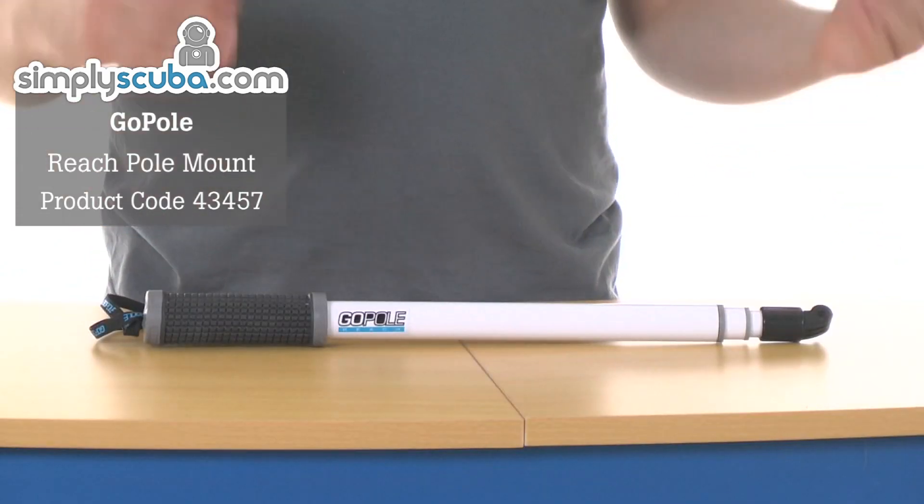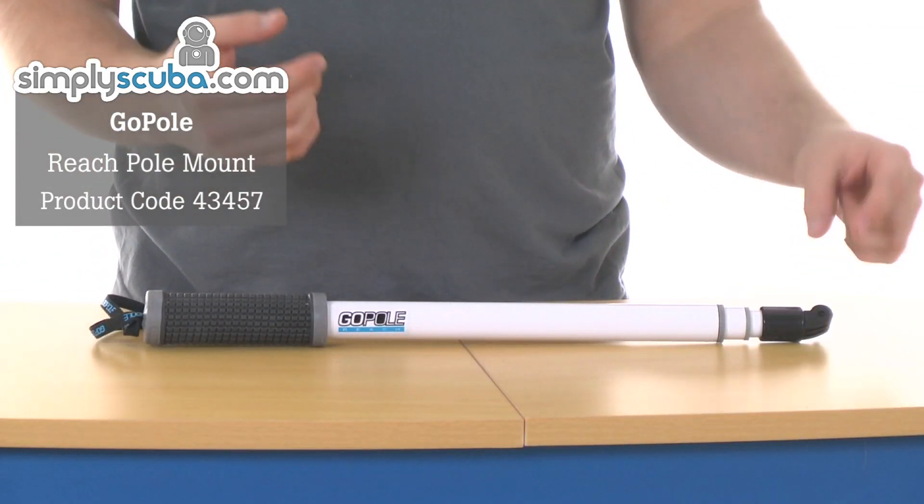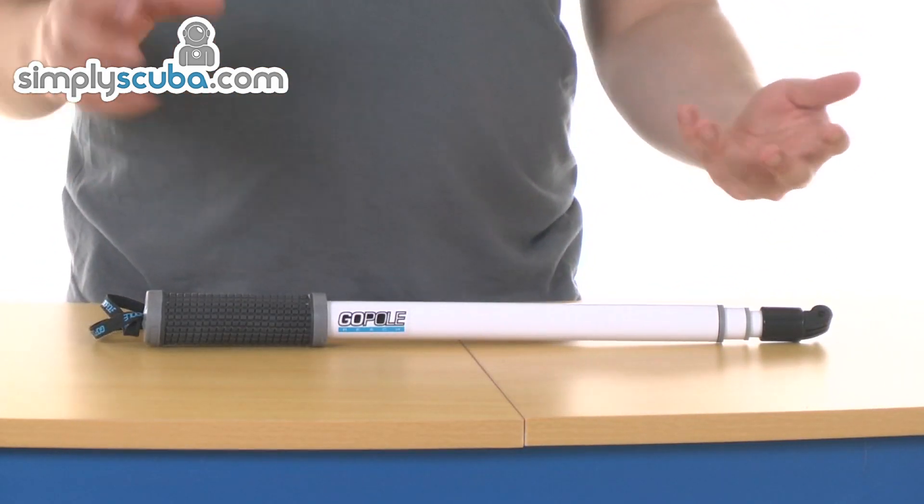It's a great telescopic design pole specifically designed to mount a GoPro camera on the end and allow you to get certain shots and have a 360 turn with the pole itself, just getting into shots that you wouldn't be able to get otherwise.